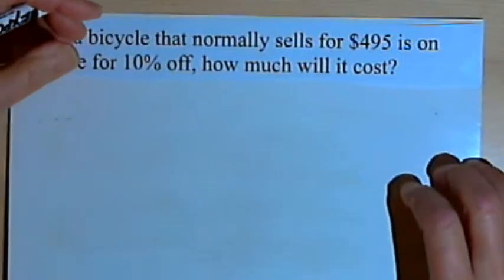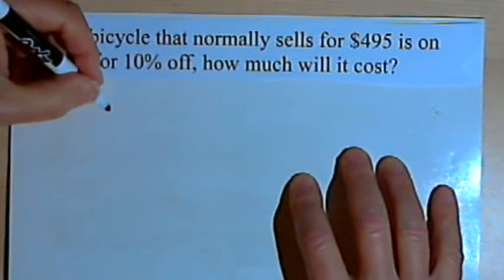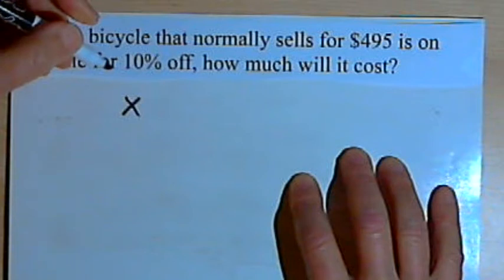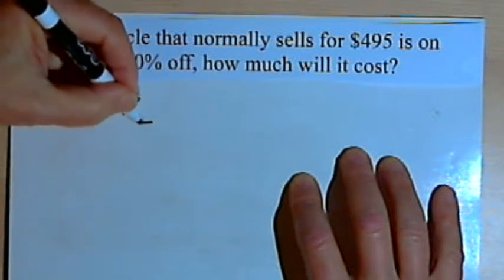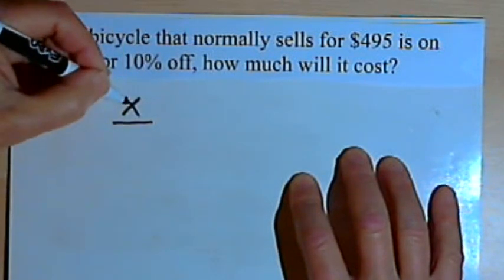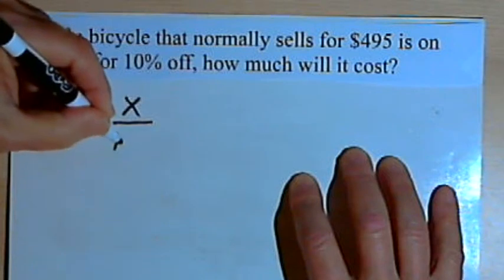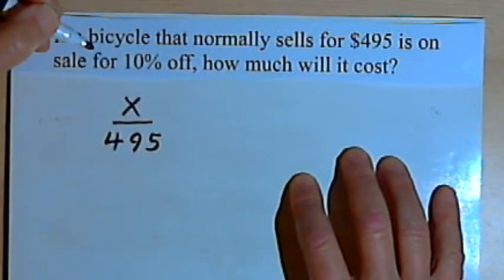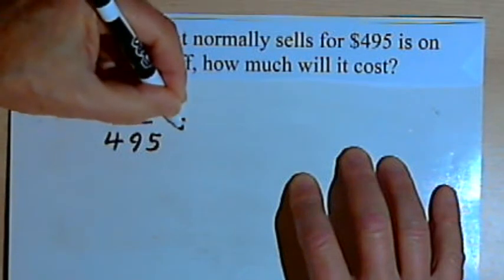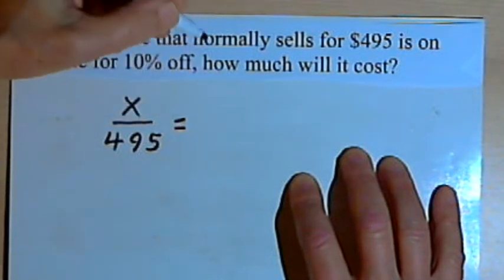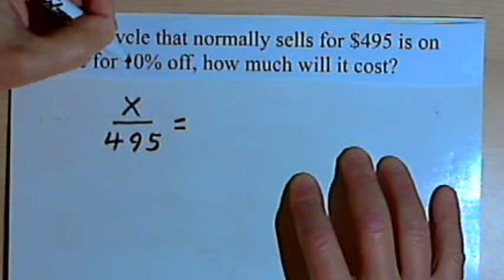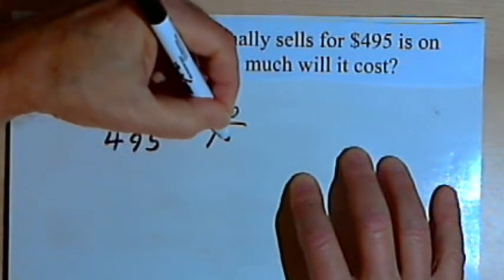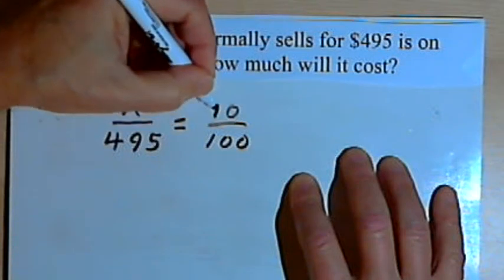Let's start out by finding out how much the discount was. So we'll call that x. That's the 10% that's taken off. And that will be the numerator of a fraction. The denominator will be the original price, $495. We'll take that fraction, or ratio, and set it equal to the percent, which was 10%, and I'm going to write that 10% as a fraction, 10 over 100.